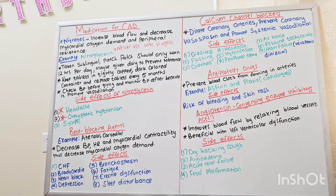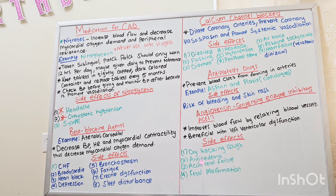Now let's discuss angiotensin-converting enzyme inhibitors, ACE inhibitors. They improve blood flow by relaxing blood vessels and are used especially with patients with left ventricular dysfunction. Side effects are dry hacking cough, angioedema, acute renal failure, and fetal malformation. An example of an ACE inhibitor is lisinopril.